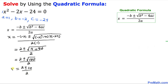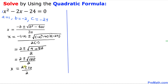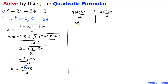Now we split into the positive and negative cases. Moving to the right hand side: x equals 2 plus 10 divided by 2, and x equals 2 minus 10 divided by 2. The first gives us 12 divided by 2, so x equals 6 is one solution. The second gives negative 8 divided by 2, so x equals negative 4 is the other solution.